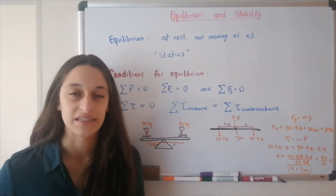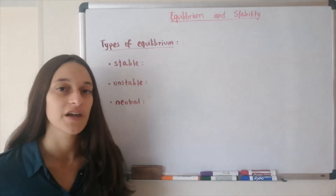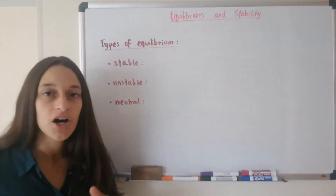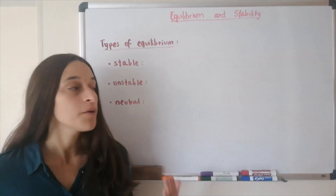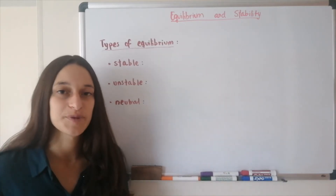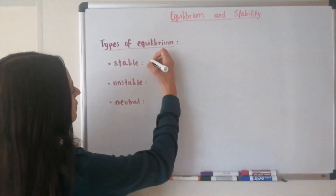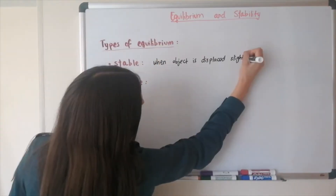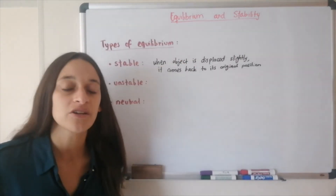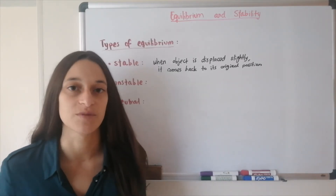Now let's move on to stability. When talking about stability, we have to discuss the three types of equilibrium an object can be at: stable, unstable, or neutral equilibrium. When an object is at stable equilibrium, it means that if it's displaced slightly from its position, it will come back to its original position. We call this being balanced.